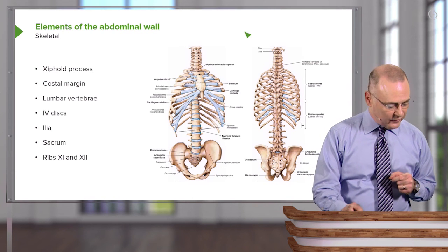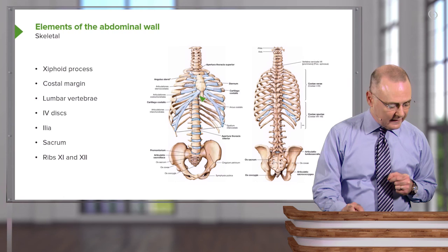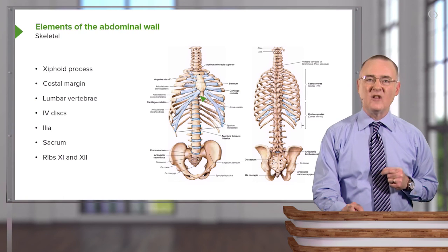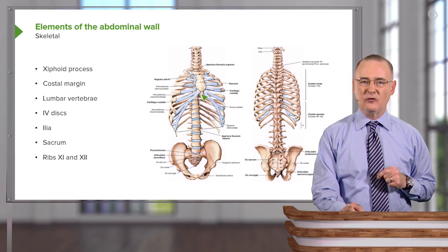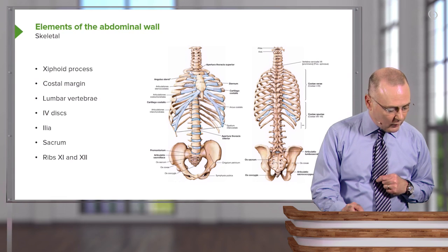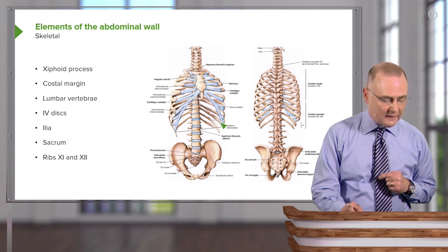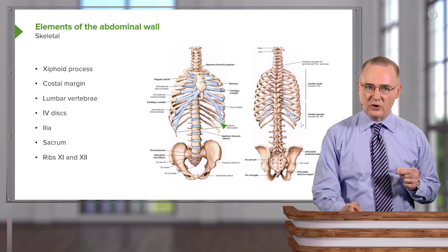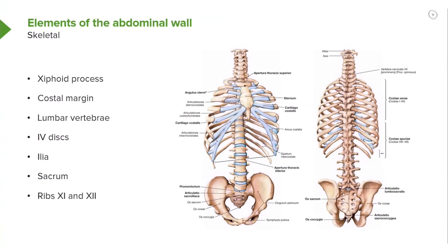We will start in the anterior midline at the level of the xiphoid process — that is one of the skeletal components. We will work our way along the ribcage, and the costal cartilages we see along here constitute the costal margin, which also represents skeletal components of the abdominal wall.